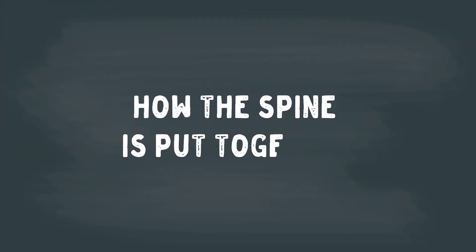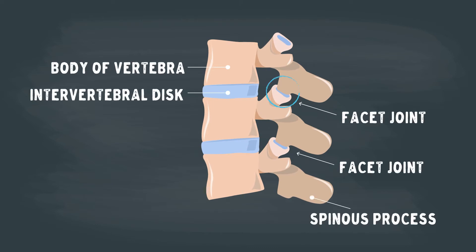Okay, now that we're on the same page, let's talk about how the spine is put together. Facet joints connect one vertebra to the other along the back of the spine.